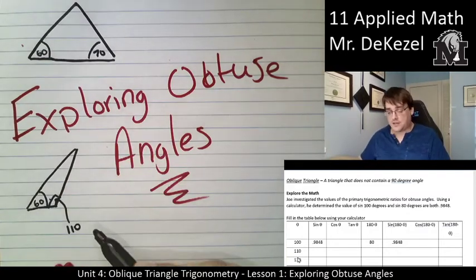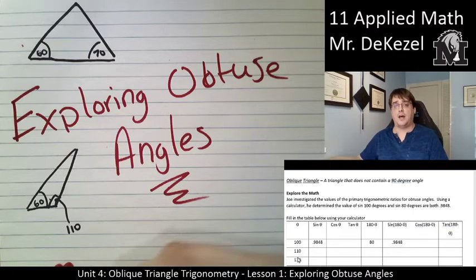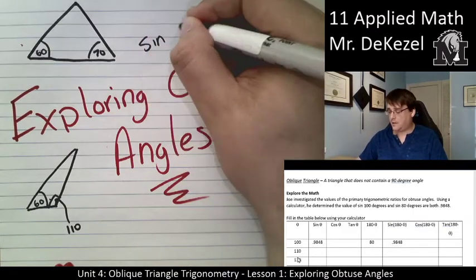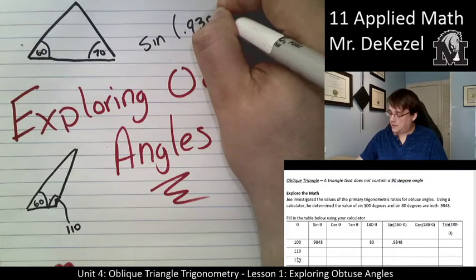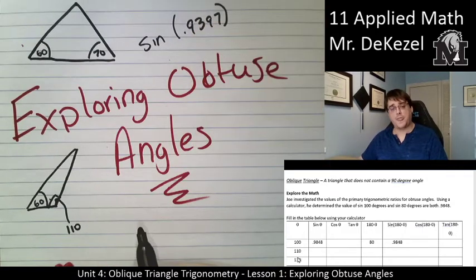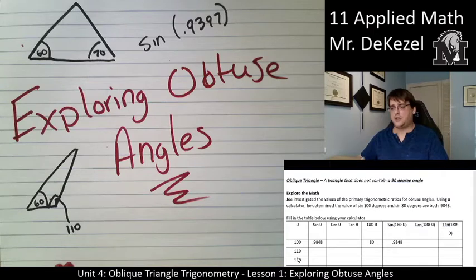Both would give us the same answer. Both would come from the sine of 0.9397. So what we're going to do in these lessons and throughout is we're going to explore how this can affect some of our calculations and how sometimes we don't really actually know which triangle it is. So we have to work out both of them.